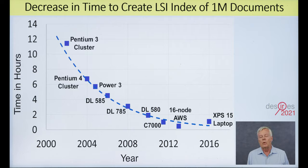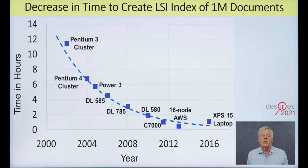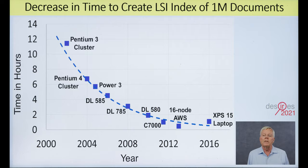This chart shows one of the biggest stories over the past 20 years: the reduction in the amount of time required to create an index for a given collection of documents. This is the time required to create an LSI index for a million documents using the computers of the timeframe. 20 years ago, we used clusters of processors and would wait tens of hours to have an LSI space constructed. The last spot on the curve is for a Dell laptop creating full LSI indexes for million-document collections in tens of minutes, and that was five years ago. So historically there were concerns about how computationally intensive LSI is, but in fact that's no longer a problem.